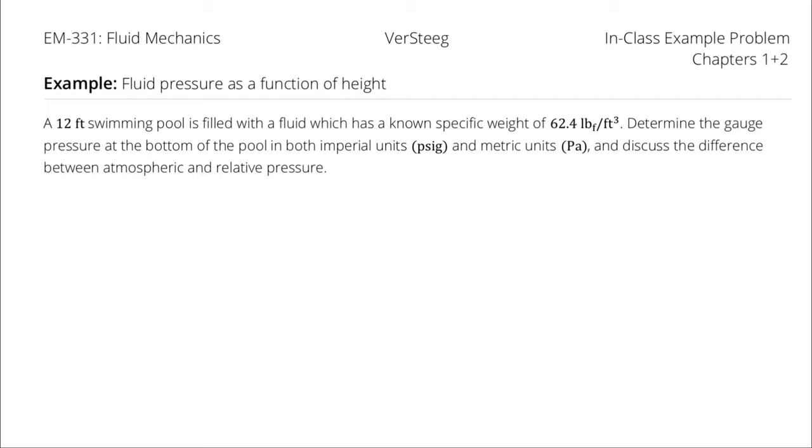A 12-foot swimming pool is filled with a fluid which has a known specific weight of 62.4 pounds of force per cubic foot. Determine the gauge pressure at the bottom of the pool in both imperial units and metric units and discuss the difference between atmospheric and relative pressure.